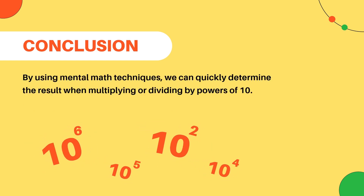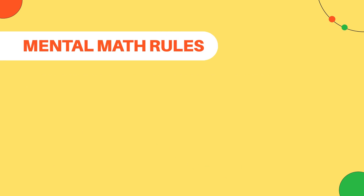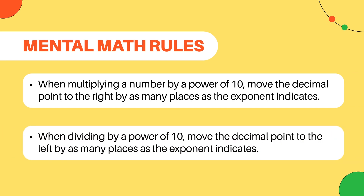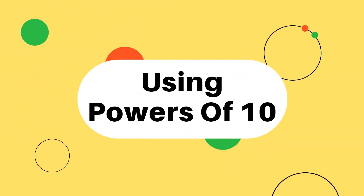In conclusion, by using mental math techniques, we can quickly determine the result when multiplying or dividing by powers of 10. Just remember the rules that we learned in this lesson. When multiplying a number by a power of 10, move the decimal point to the right by as many places as the exponent indicates. And when dividing by a power of 10, move the decimal point to the left by as many places as the exponent indicates. You can now practice applying these rules and techniques to become more proficient in working with powers of 10. Good luck.